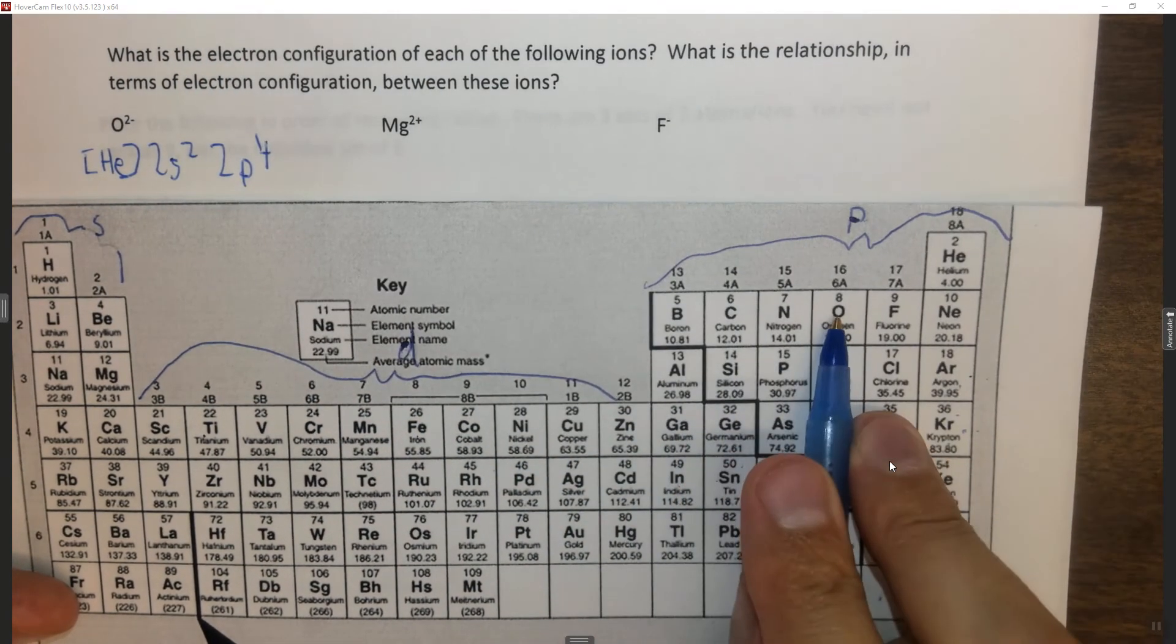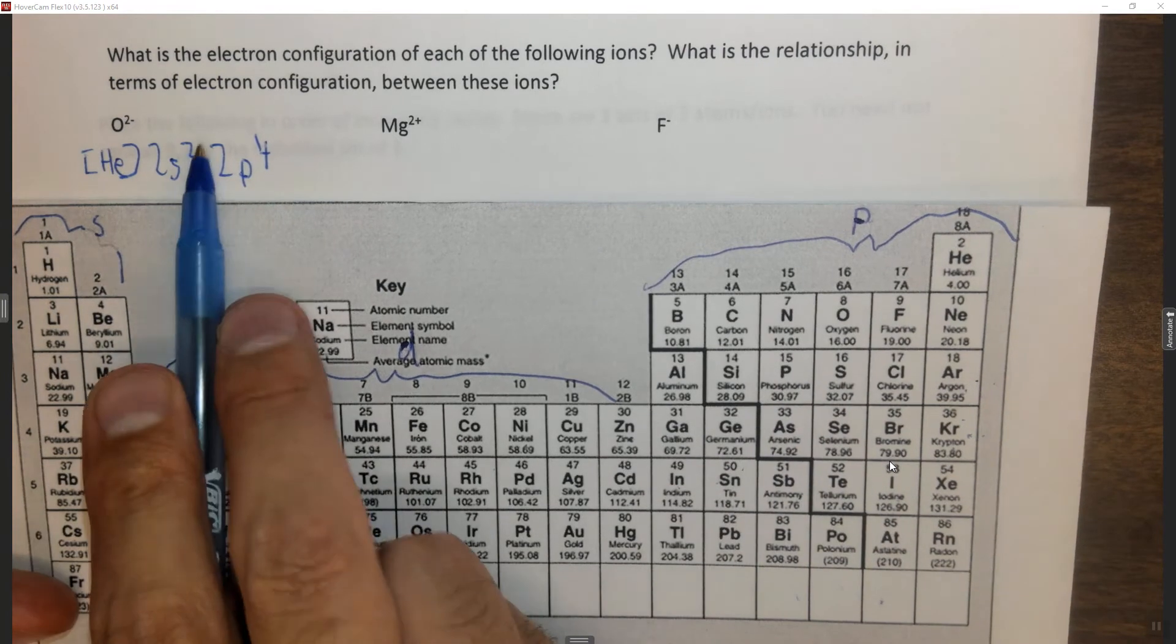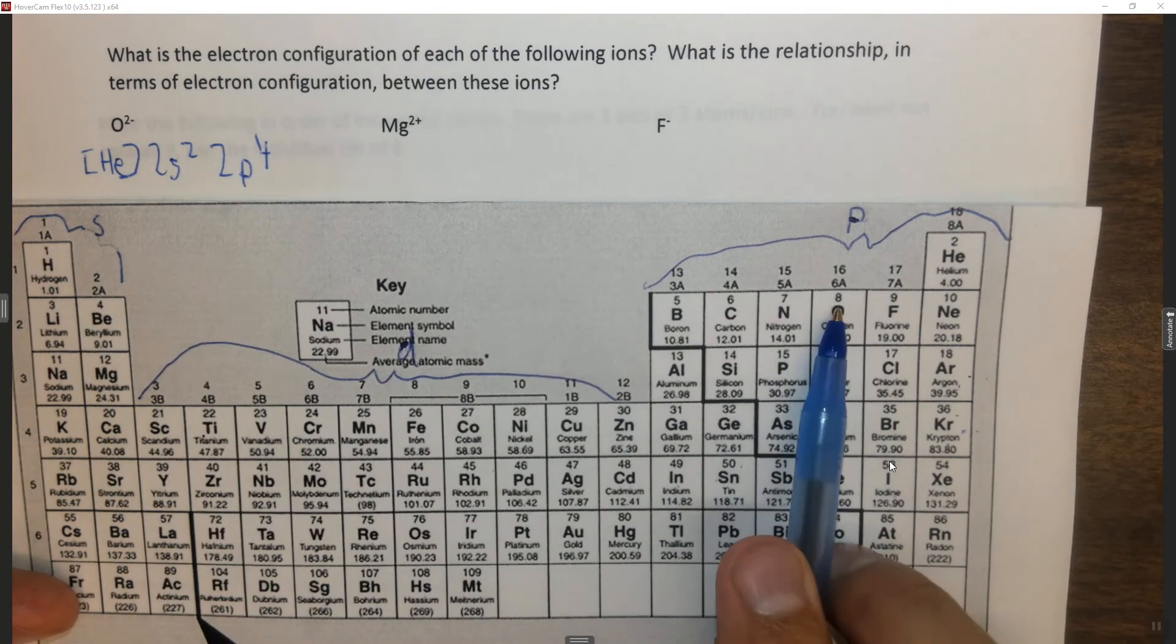1, 2, 3, 4. You can double check that. 2 plus 2 is 4, plus 4 is 8, and oxygen is number 8.